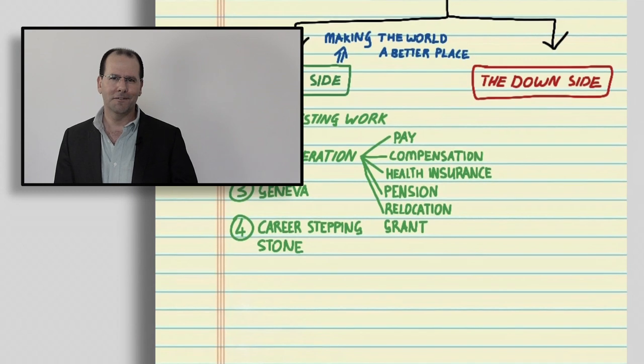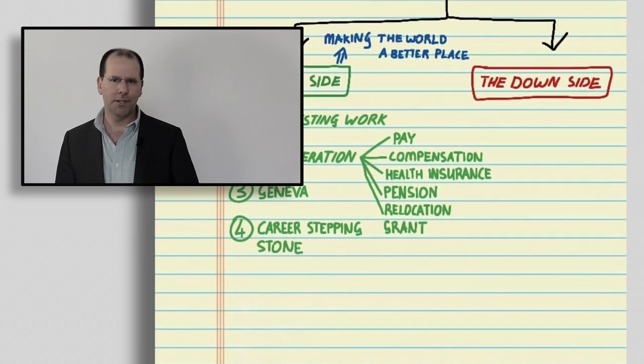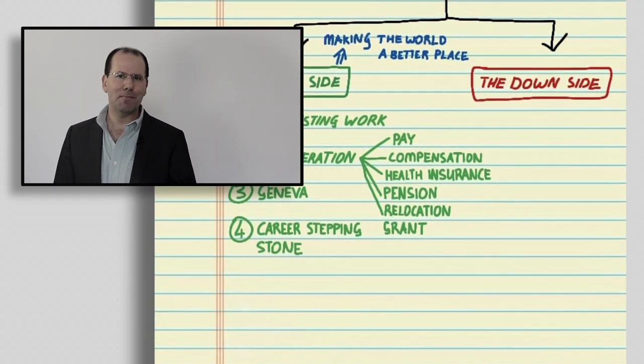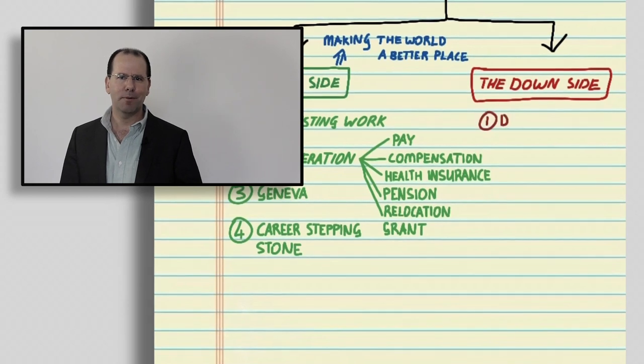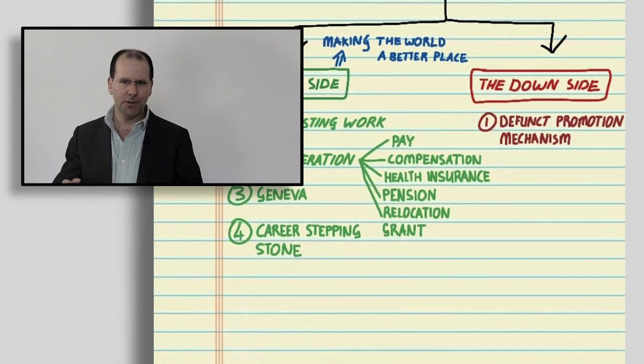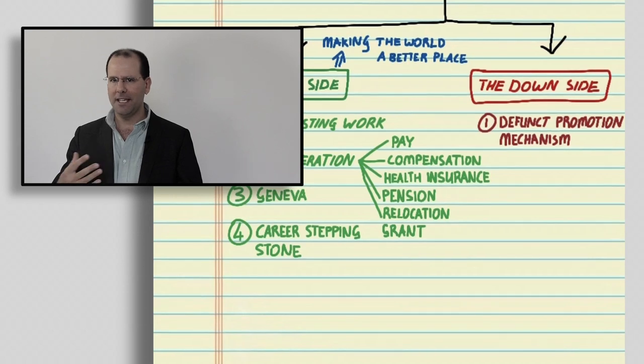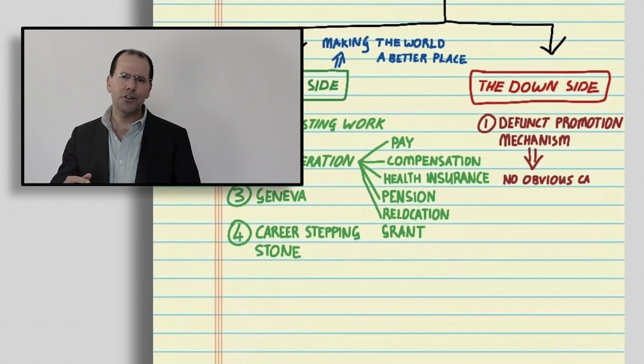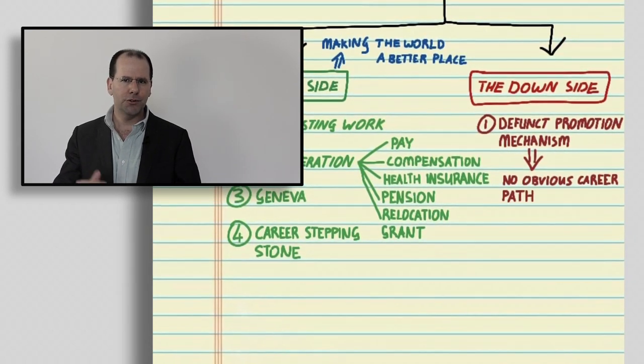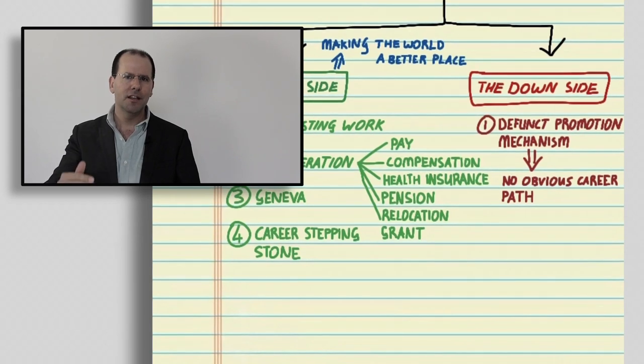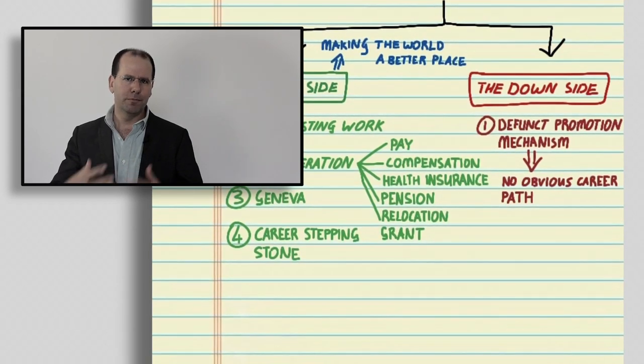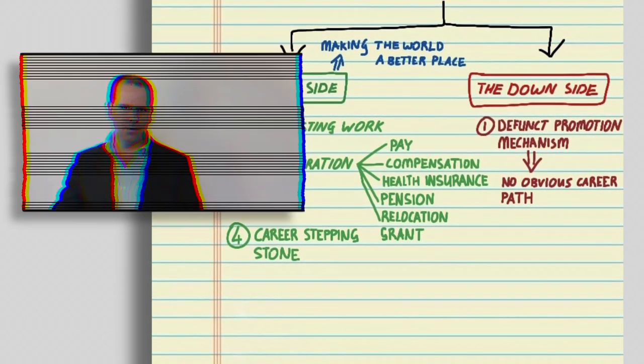The first point on the list of downside issues with respect to working at the WHO is, in my opinion, they seem to have a defunct promotion mechanism. In other words, a person working at a certain level, let's say for example you're a P3 or a P4, there's not an obvious career path within which you could get promoted to a more senior position simply based on your performance at the level that you've been working.